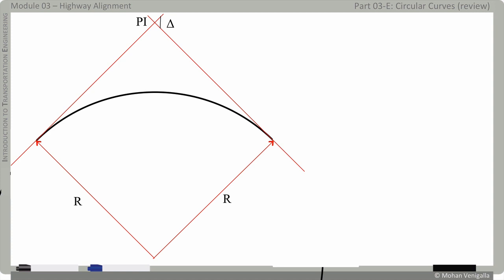And at the beginning of the curve and end of the curve you will draw a line to the center which will be your radius of the curve and the deflection angle here is going to be the central angle is going to be the same as delta as the deflection angle of the original alignment.